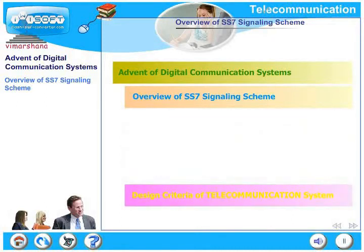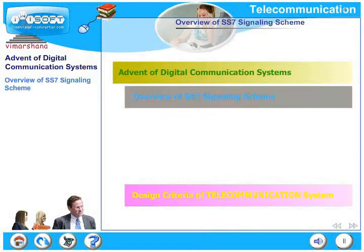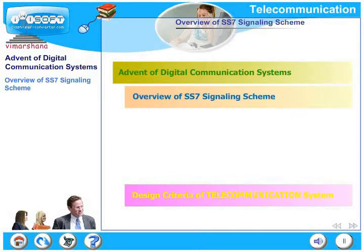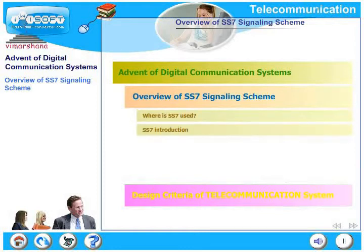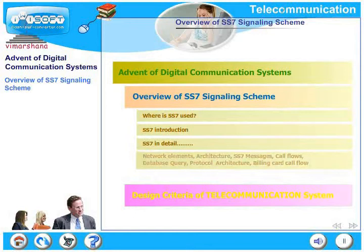In this section we will deal with the overview of the SS7 signaling scheme. We have already seen the role of SS7. Now in detail we will look at where SS7 is used and give a brief introduction. Later we will look at SS7 in detail — in particular the network elements, architecture, the messages that flow in SS7 signaling, typical call flows, a database query based call flow, the protocol architecture, and a billing card call flow.